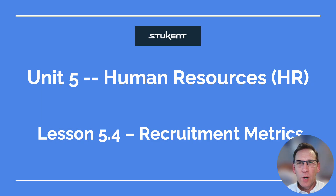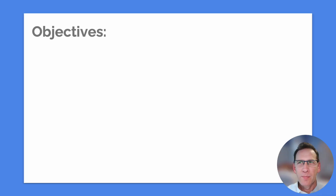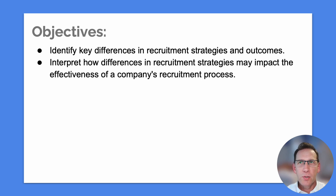Hi everyone and welcome to our unit 5 on human resources. This is lesson 5.4. We're talking about recruitment metrics in this lesson. Our objectives are to identify key differences in recruitment strategies and outcomes, and to interpret how those differences in recruitment strategies may impact the effectiveness of a company's recruitment process.